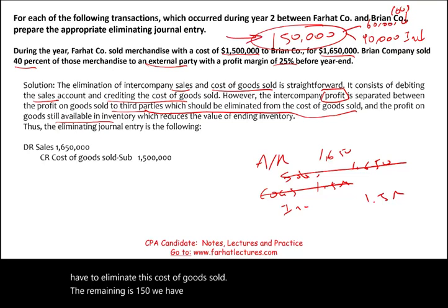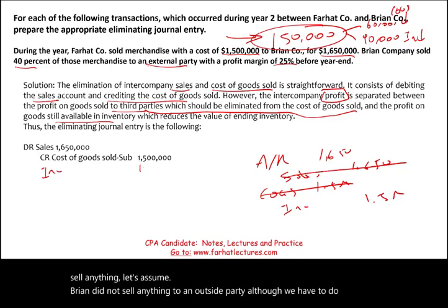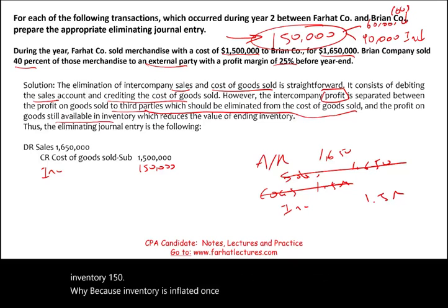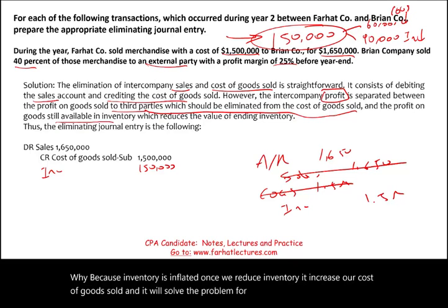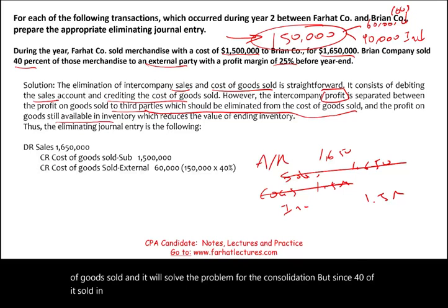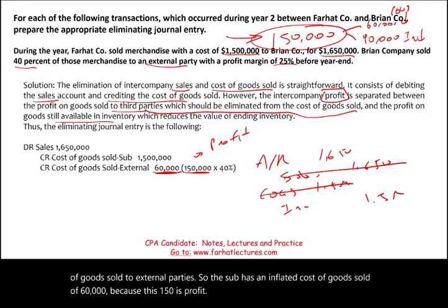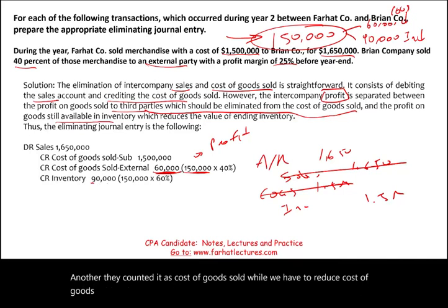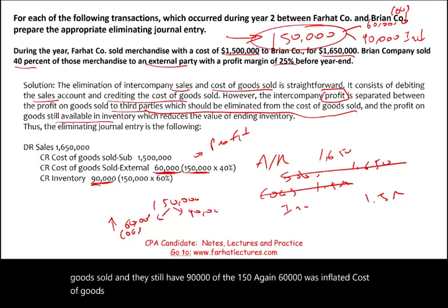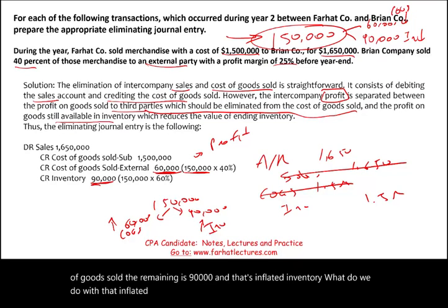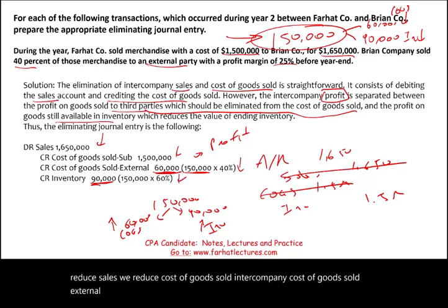The eliminating entry removes intercompany sales of $1,650,000, removes $1,500,000 intercompany cost of goods sold, reduces external cost of goods sold by $60,000 (the intercompany profit on goods already sold), and reduces inventory by $90,000 (the intercompany profit remaining in inventory). This treats the intercompany sale as if it never occurred from a consolidated perspective.